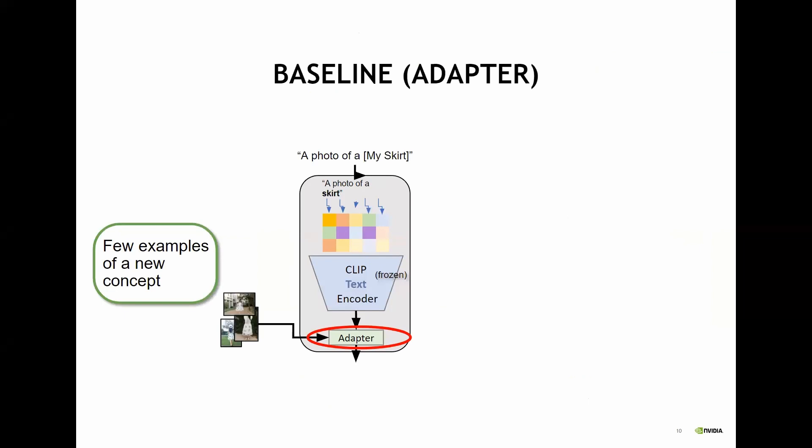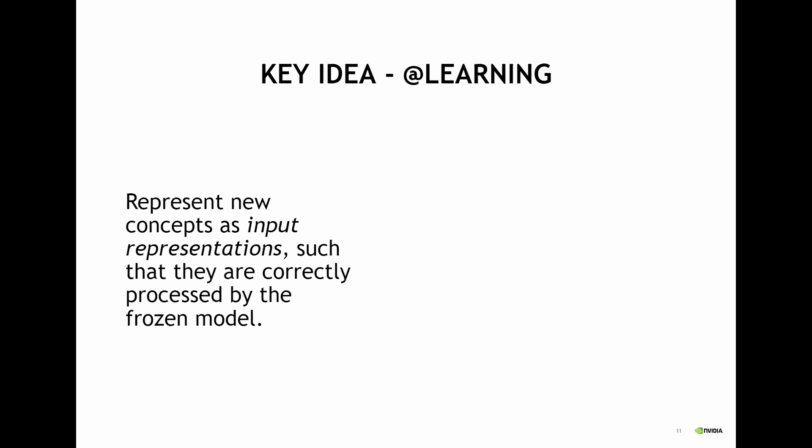As a simple baseline, you can think about an adapter approach. An adapter uses some layers on top of CLIP that adapt it to recognize the new concept. This approach tends to be brittle and fails when the input sentences deviate from the template used for training, probably because the adapter overrides the output of the CLIP encoder. The key idea is to represent a new concept as an input to the text and visual model such that it can be correctly processed by the frozen model.